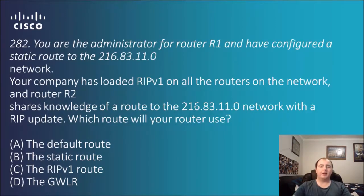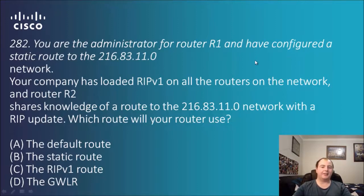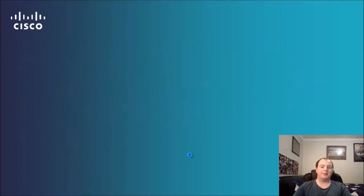Question 282: you are the administrator for Router 1 and have configured a static route to the 216.83.110 network. Your company has loaded RIP version 1 on all routers and Router 2 shares knowledge of a route to the same network via a RIP update. Which route will the router use — the static route, the default route, the RIP version 1 route, or the GWLR? Since you have configured it as static, the answer is B — the static route.